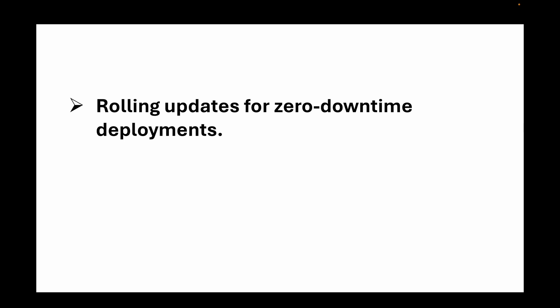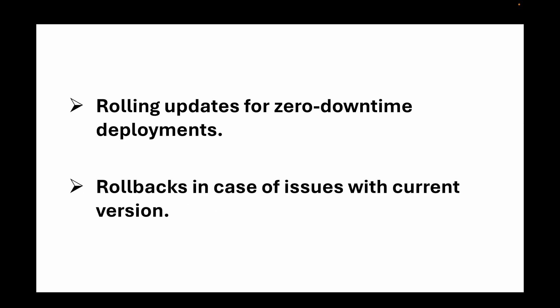Key features of deployments include: rolling updates for zero-downtime deployment — if you want to roll out updates without any downtime, deployments are the perfect option. They also provide rollbacks in case of issues with your current version — if you encounter issues when deploying a newer version, you can easily roll back to the previous stable version. These features are not available in replica sets.